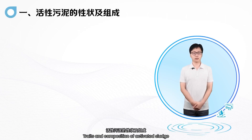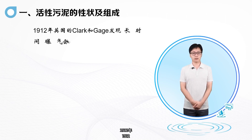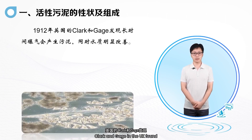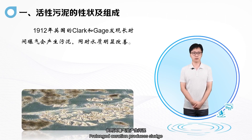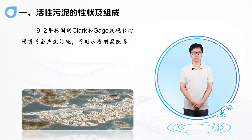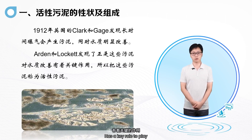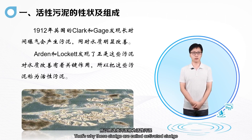Traits and composition of activated sludge. In 1912, Clark and Gage in the UK found that prolonged aeration produces sludge, and meanwhile water quality improved significantly. Arden and Lockett found that it is this sludge that contributes to the improvement of water quality and has a key role to play. That is why this sludge is called activated sludge.